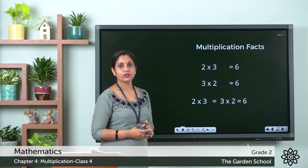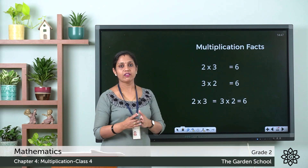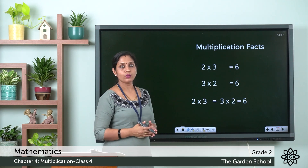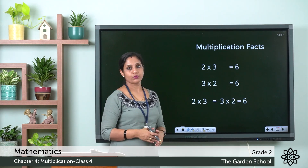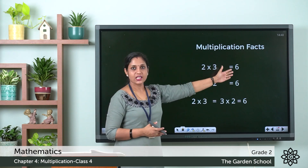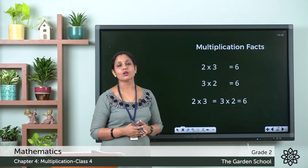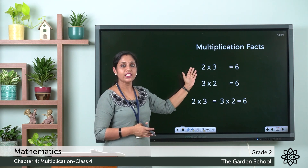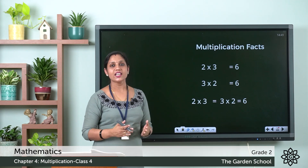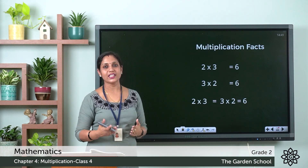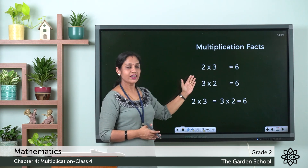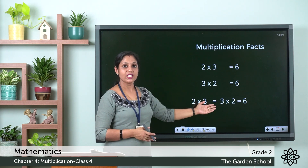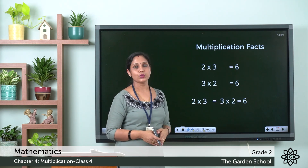Here you can see 2 × 3. We have learned the table of 2 — 2 threes are 6. Now look at the second row: 3 × 2. We know that 3 twos are also 6. So even if the order of the multiplier is changed, the answer remains the same. Therefore 2 × 3 = 3 × 2 = 6.